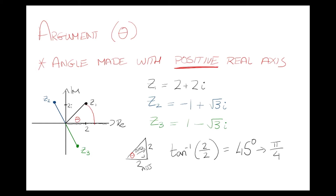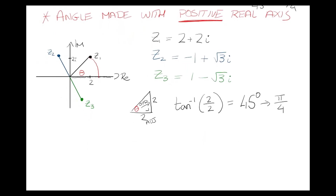So it's tan inverse of opposite over adjacent, which is 2 over 2, and tan inverse of 1 is 45 degrees. We need that in radians, which is pi over 4. If your calculator is in radians it gives pi over 4 directly; otherwise convert from degrees. Remember: 180 degrees equals pi, so 90 degrees is pi over 2, and 45 degrees is pi over 4.